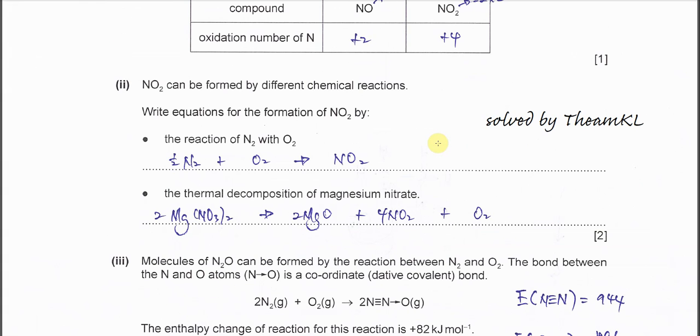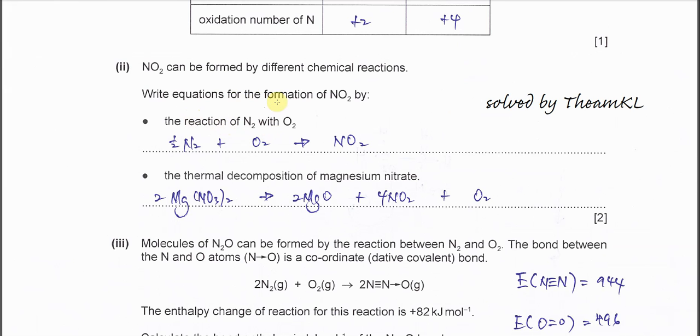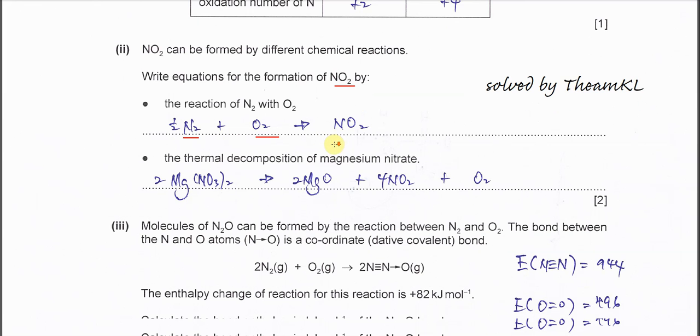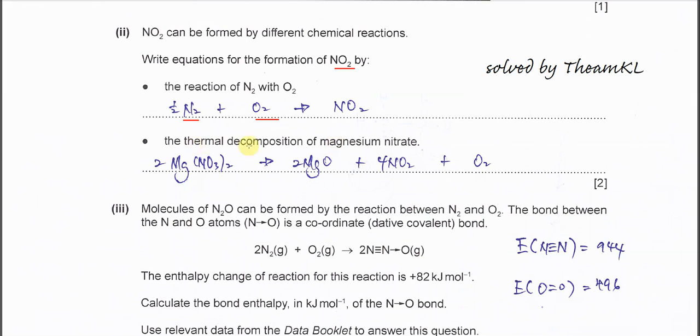Part 2: Nitrogen dioxide can be formed by different chemical reactions. Write the equation for the formation of NO2. So we just put NO with O2 then form NO2. Balance it. Make sure it forms one mole. The thermal decomposition of magnesium nitrate - this is very easy. Magnesium nitrate forms magnesium oxide white solid and brown gas which is NO2 and oxygen gas. So the ratio is 2, 2, 4, 1.